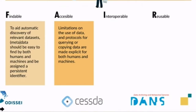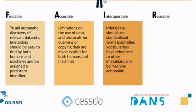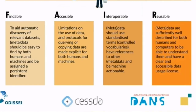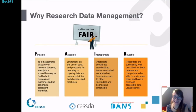The Accessible part talks about how your data can be accessed and reused, and that limitations on use of data, access rights, and what you can and cannot do with the data should be explicitly stated. Data should also be Interoperable, meaning the data and metadata should use standardized terms — controlled vocabularies — and have references to other metadata readable by humans and machines. Lastly, data should be Reusable, meaning information attached to your data, including licenses, should tell humans and computers how to access and reuse it.